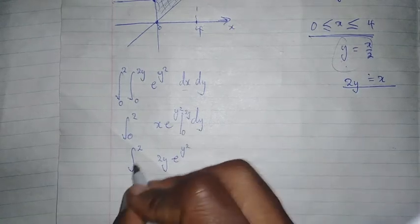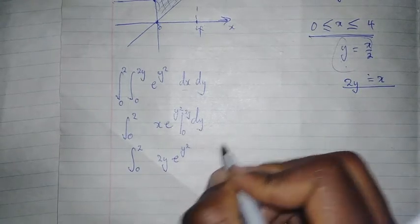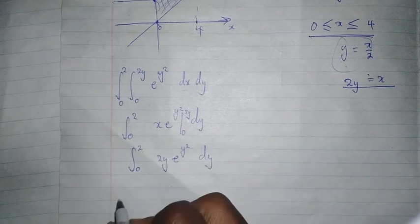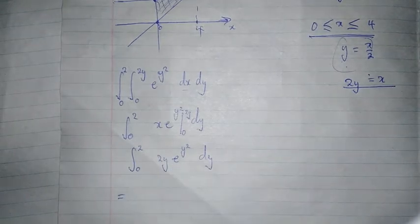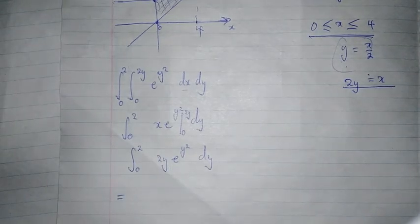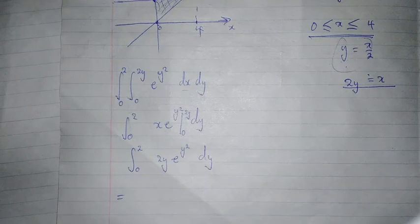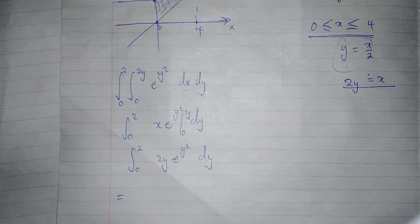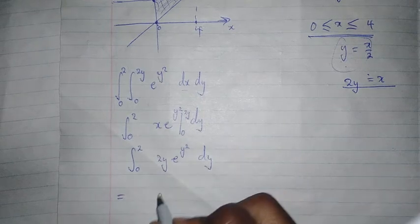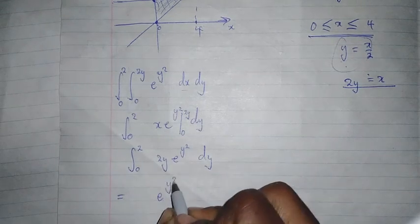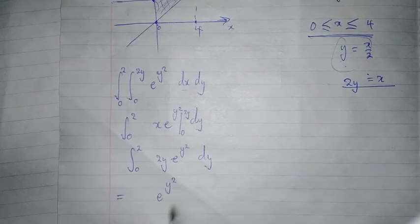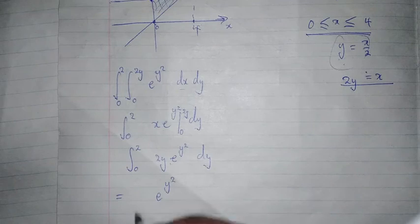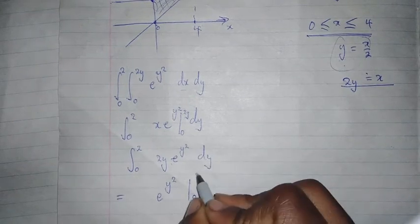Now to integrate this, if you look closely, 2y e to the power y squared is simply the derivative of e to the power y squared. So if you differentiate this, you're going to get this. The limits are 0 to 2.